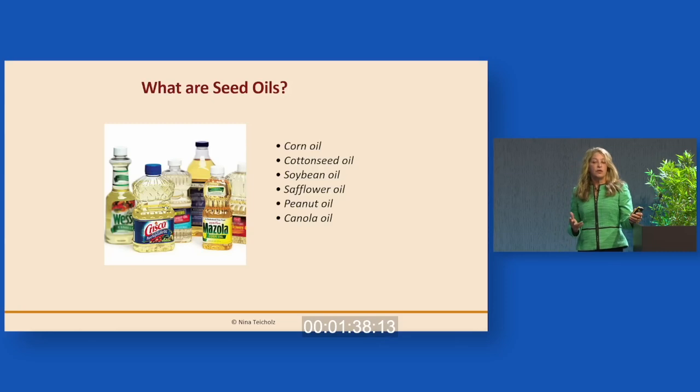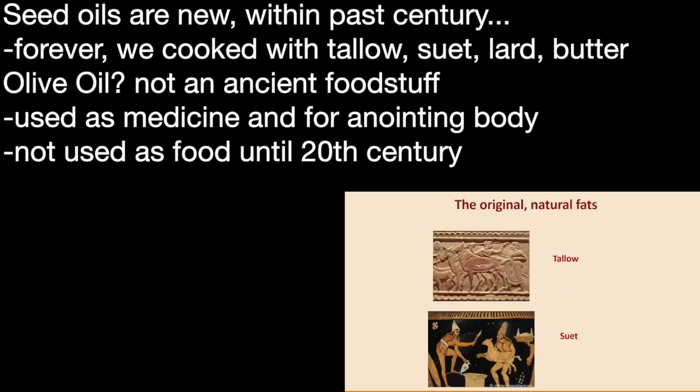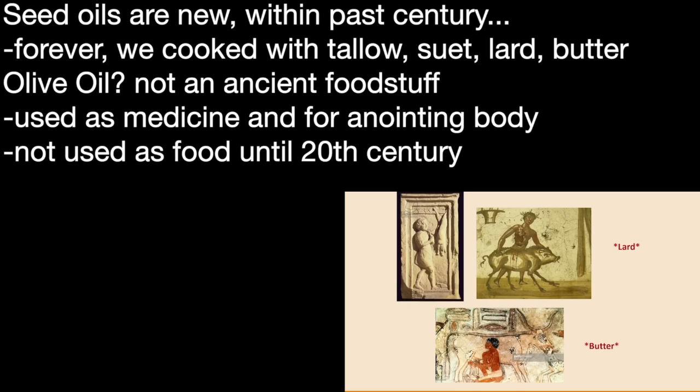They're all relatively new. The history of our cooking fats was not seed oils. These are the fats that we cooked with: tallow that came from cattle, suet which comes from ruminant animals around the organs, lard which comes from pigs, and butter. These were the main — really the only — cooking fats in the Western world.